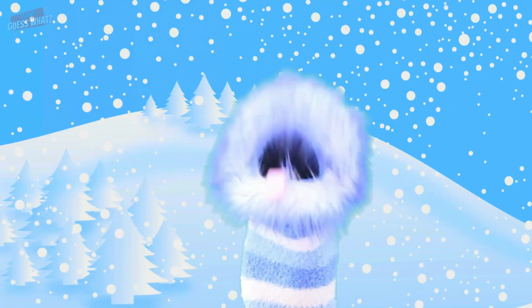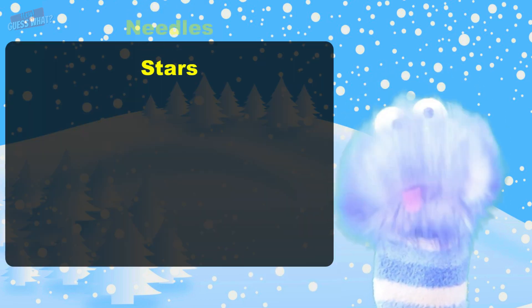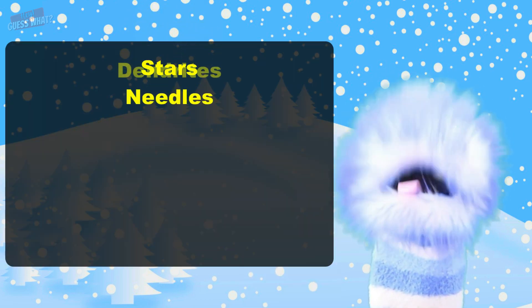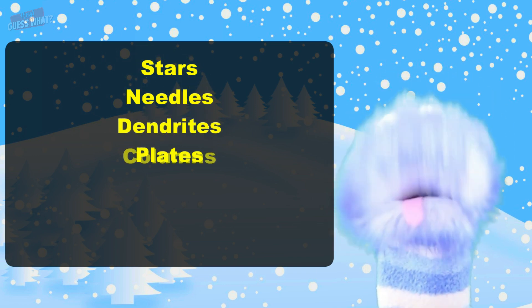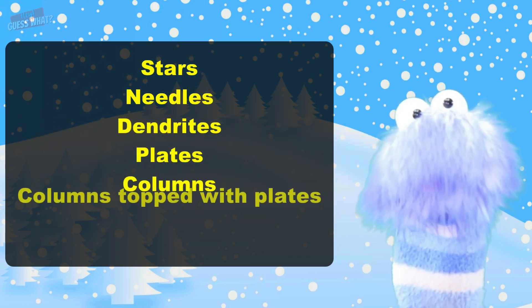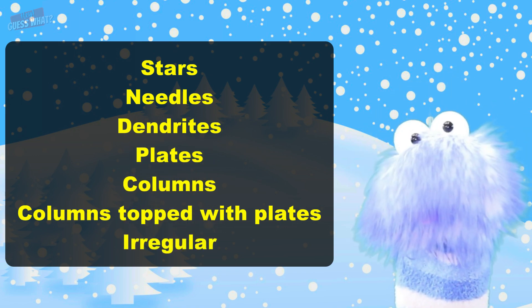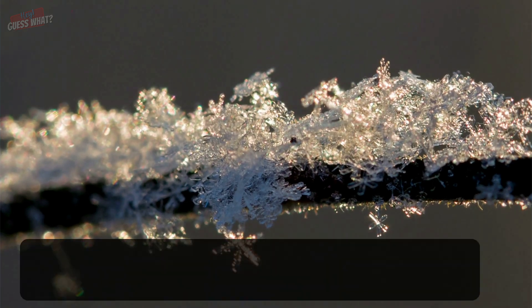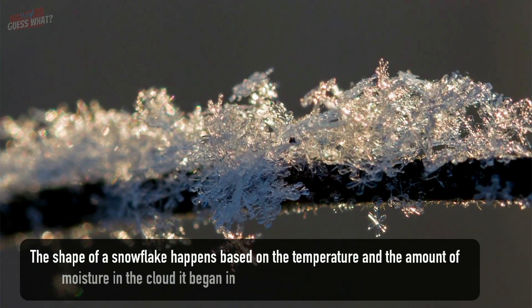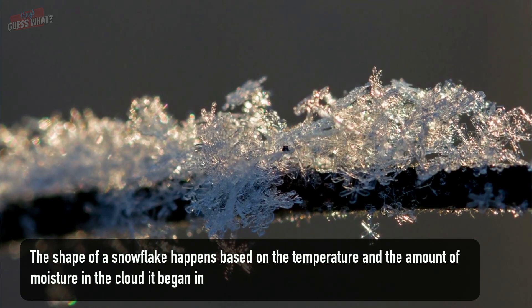Snowflakes actually form seven basic shapes. They are stars, needles, dendrites — which means they have branches — also plates, columns, columns topped with plates, and irregular snowflakes, which means they're damaged. The shape of a snowflake happens based on the temperature and the amount of moisture in the cloud that it started in.